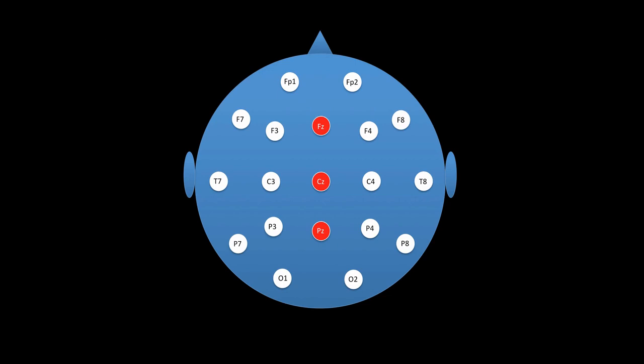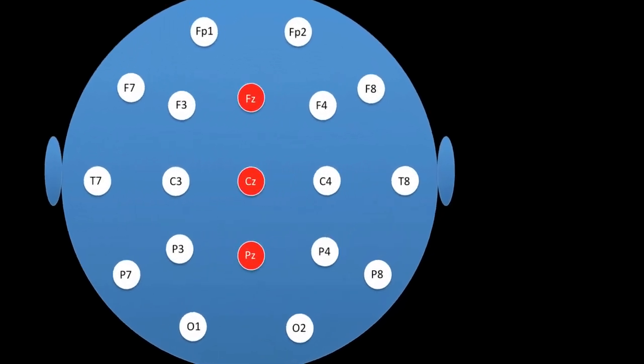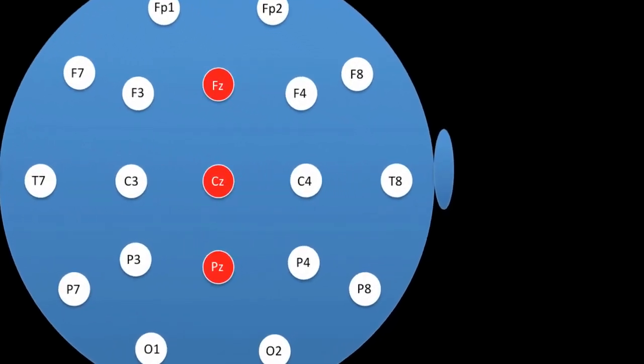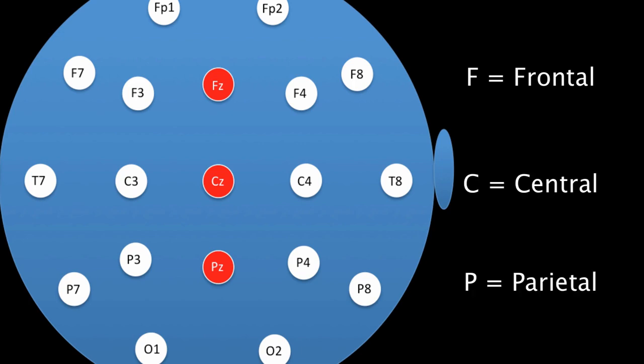The letters are indicators of position on the head. In this central chain of electrodes, F stands for frontal, C for central, and P for parietal.